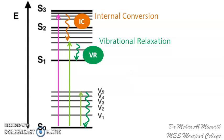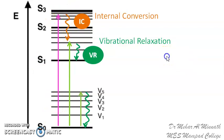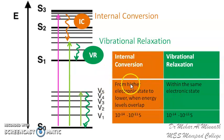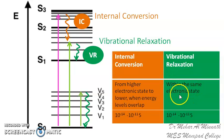Internal conversion does not happen between the first excited state and the ground state because of the large energy gap between the two. Internal conversion is observed when molecules or electrons are excited to higher energy levels such as S2. In summary, internal conversion happens from a higher electronic state to a lower electronic state when energy levels overlap, and vibrational relaxation happens within the same electronic state. Both occur in the same time span, immediately after absorption of light.